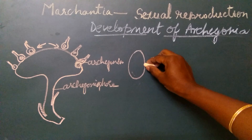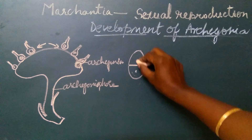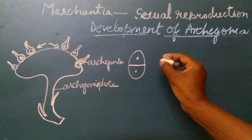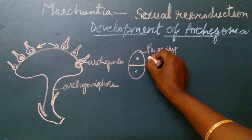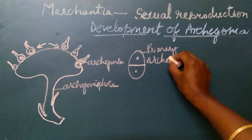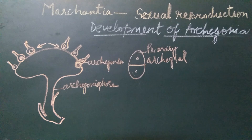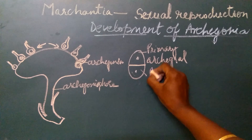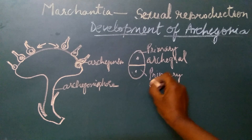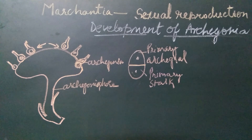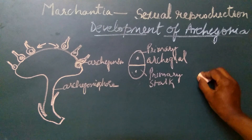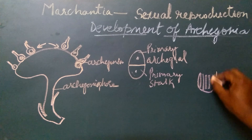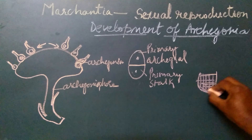This archegonial initial first divides by a transverse wall, resulting in the formation of two cells. The upper cell is called the primary archegonial cell and the lower cell is called the primary stalk cell. The primary stalk cell divides a number of times and forms a multicellular stalk which gets embedded deeper into the tissue of the archegoniophore.